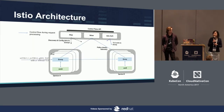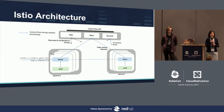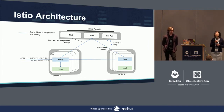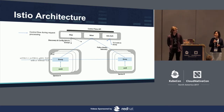E-Steel service mesh can be split into a data plane and a control plane. The data plane is composed of a number of Envoy proxies deployed as sidecars, and they are mediating and controlling all traffic between services. The control plane has three components: Pilot, Mixer, and E-Steel Auth. Pilot manages and configures the Envoy proxies to route traffic. Mixer enforces access control and usage policies, and collects telemetry data from Envoy proxies.